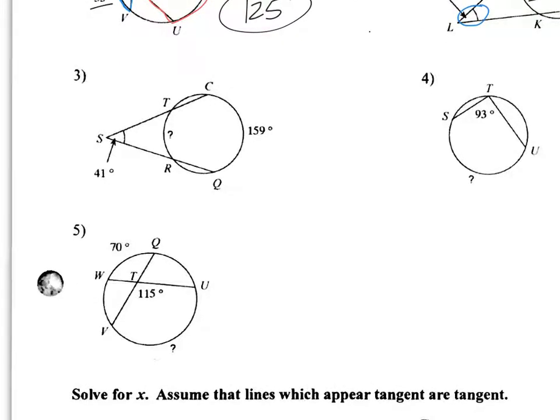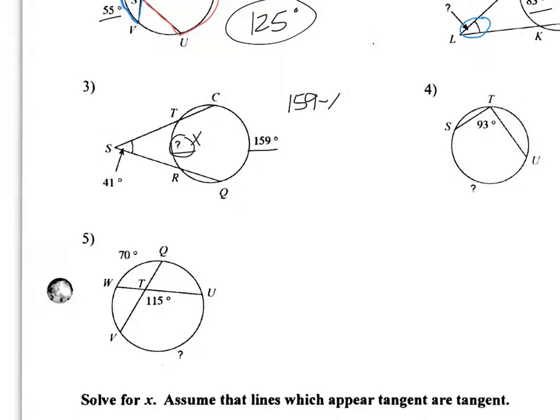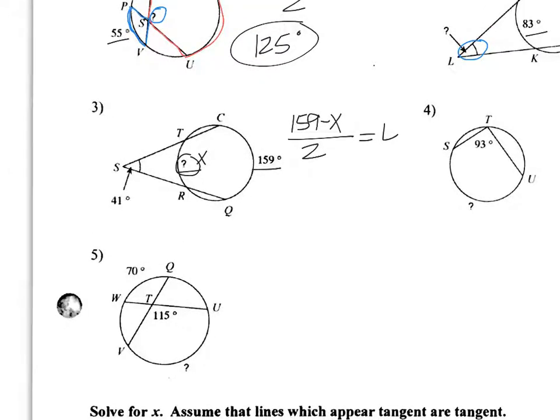Okay, let's keep going. Where is this one? This one's on the outside. Now, the problem is, here's our angle. So what I'm going to do here is, I'm going to do 159 minus x, this is my x, divided by two. Then that equals 41.